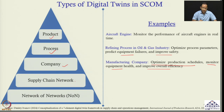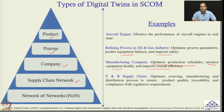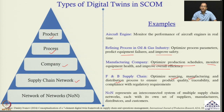Then we have the supply chain network level digital twin. For example, the digital twin of a food and beverage supply chain will help decision makers to optimize sourcing, manufacturing and distribution processes to ensure product quality, traceability and compliance with regulatory requirements. Then we have the network of networks level digital twin. What is network of networks? It represents an interconnected system of multiple supply chains, each with its own set of suppliers, manufacturers, distributors and customers.